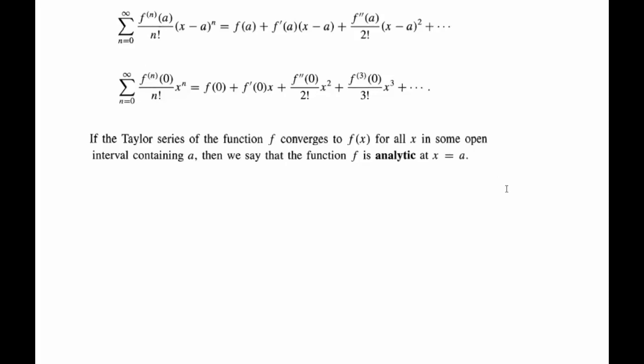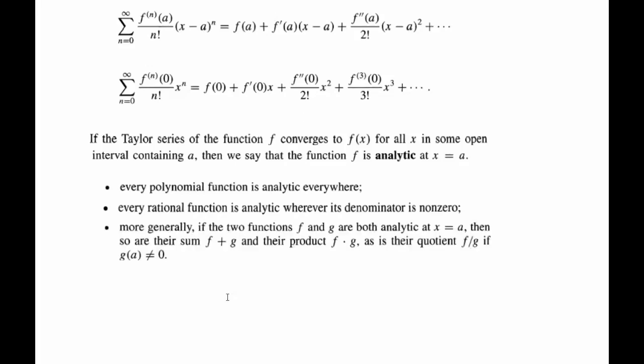Some properties of analytic functions: first, every polynomial function is analytic everywhere. Every rational function is analytic wherever its denominator is nonzero. So 1 over x is not analytic at x equals zero, but otherwise is analytic everywhere else. Another property: if you take the sum of two functions both analytic at x equals a, then their sum is also analytic, and their product is also analytic, as is their quotient f over g, as long as g(a) is not equal to zero.